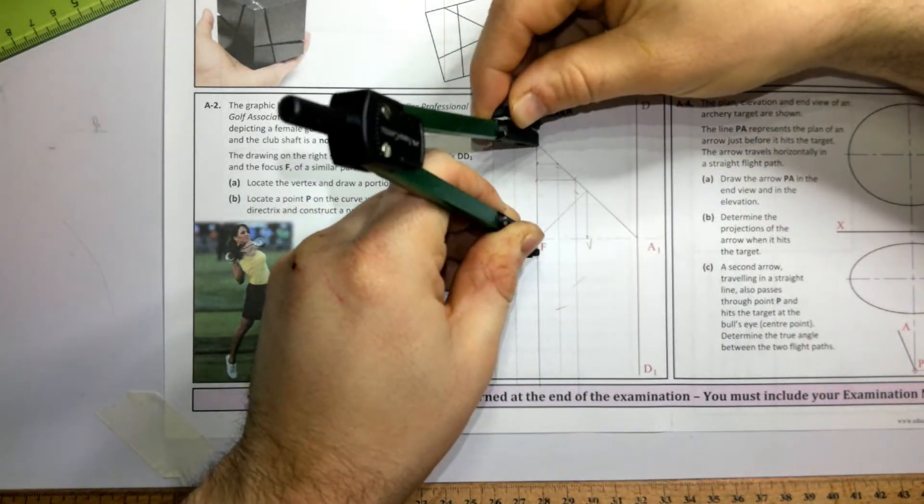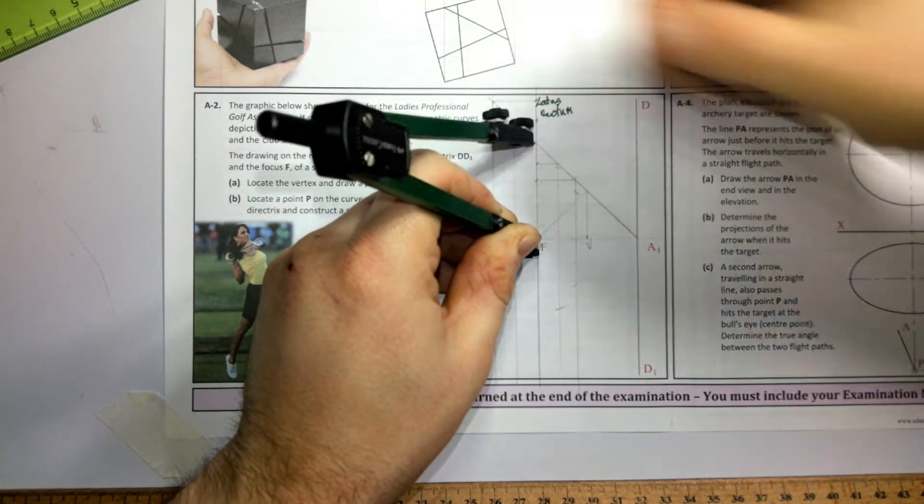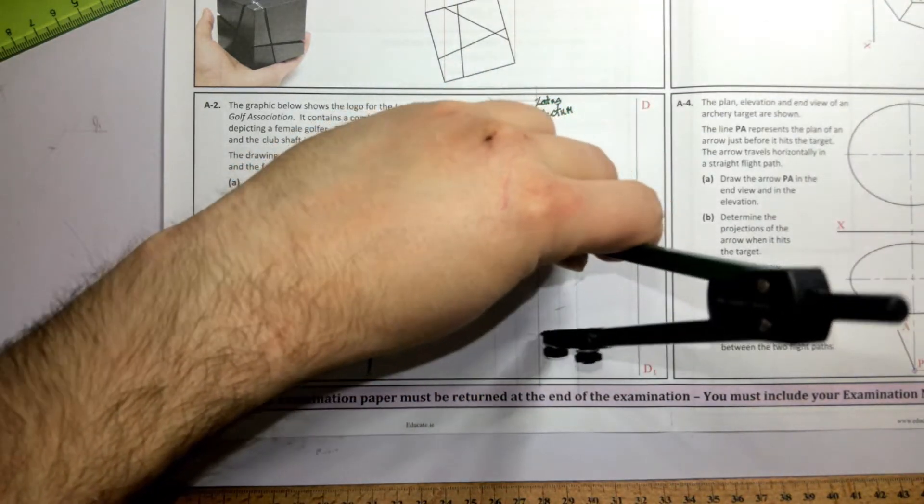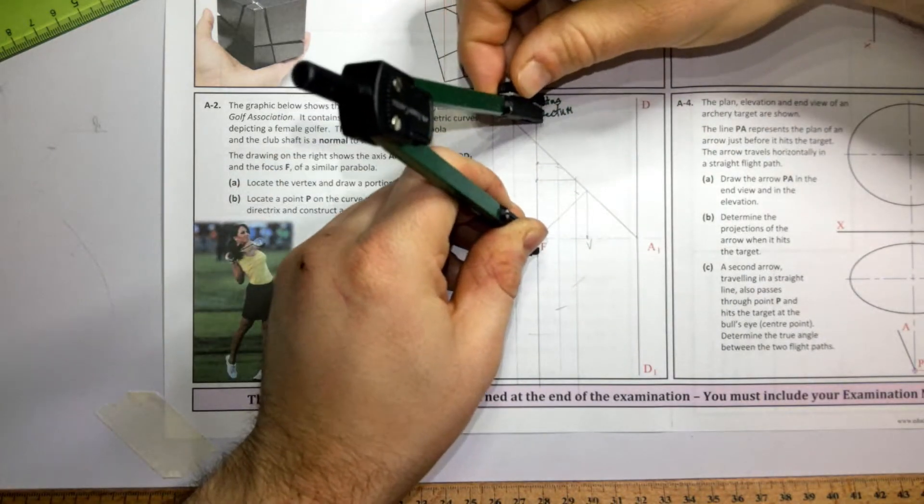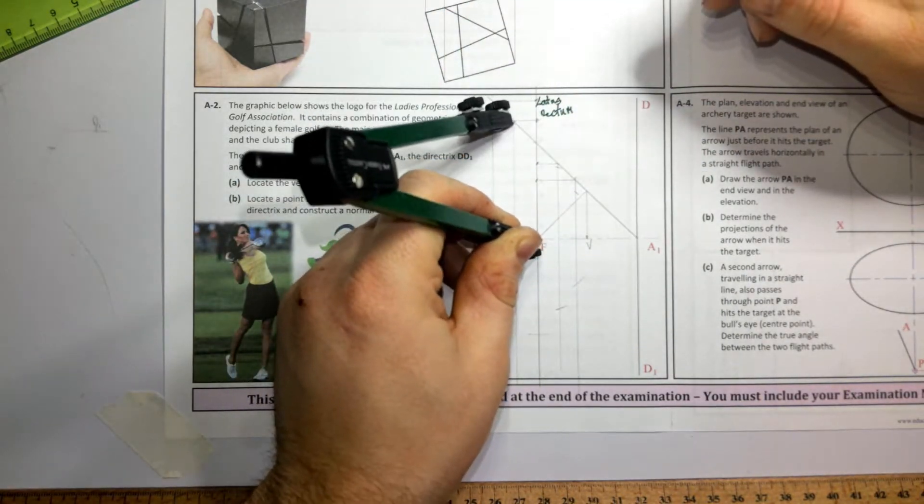Now, up to where the line of eccentricity hits the latus rectum, swing below, that's the point on the bottom. Now, up to the third horizontal line, swing back to the third vertical line.